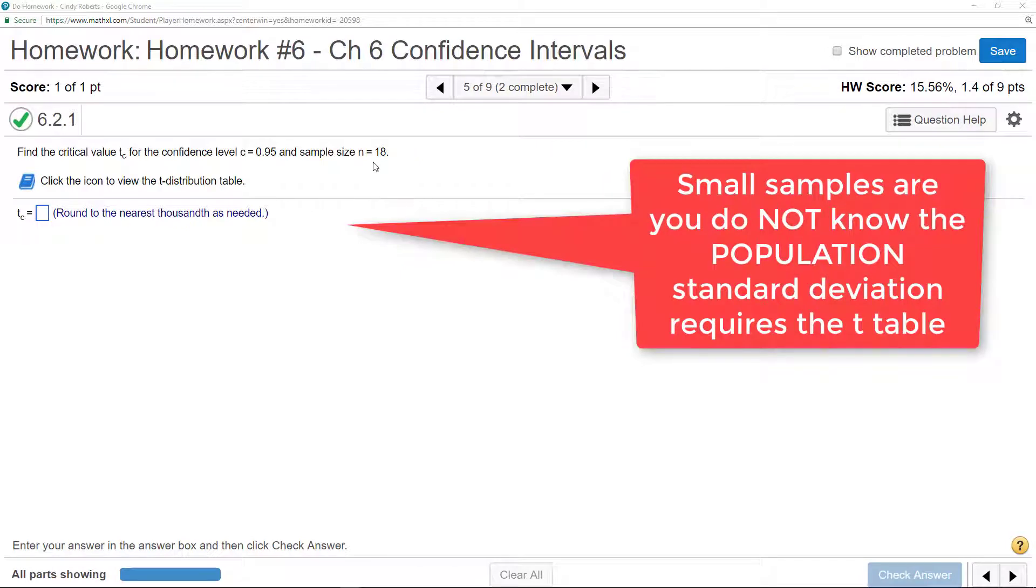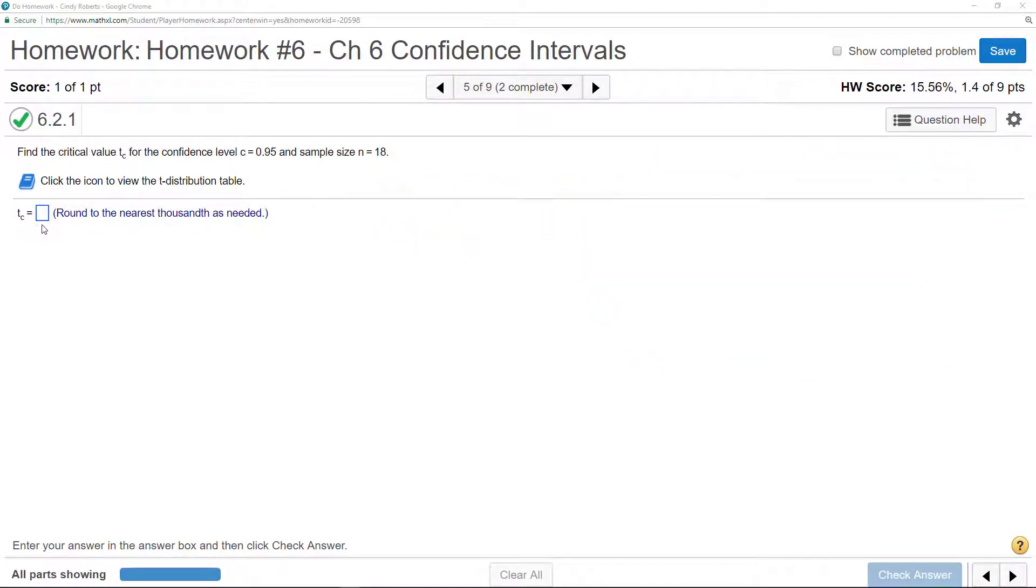For small sample sizes less than 30, or when you do not know the population standard deviation, you have to look up your critical values in a t-table.